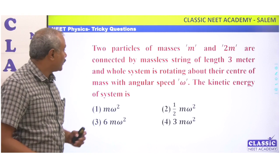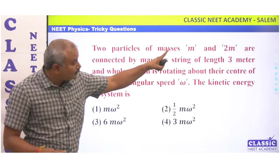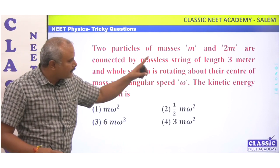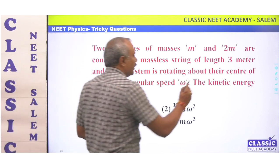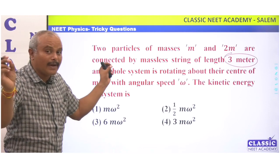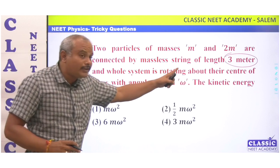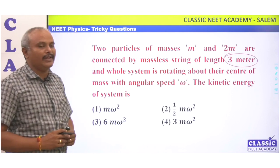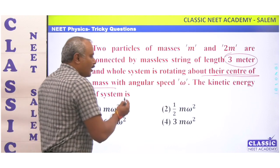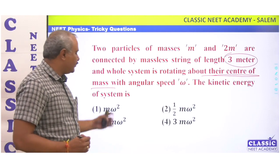Let's see: two particles of mass m and 2m are connected by a massless string of length 3m, and the whole system is rotating about their center of mass with an angular speed of omega. We need to find the kinetic energy of the system.